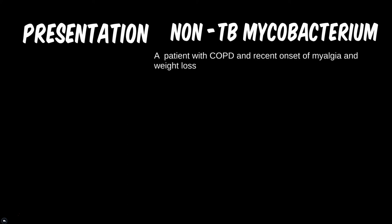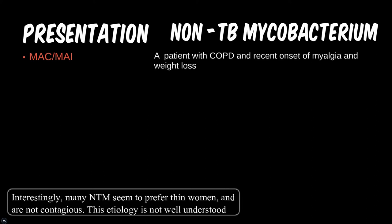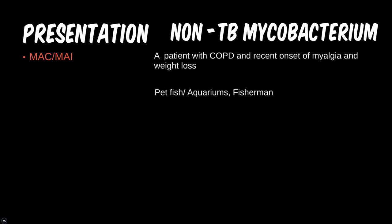If a patient comes in with a history of chronic obstructive pulmonary disease and is now complaining of myalgia and weight loss, which should we consider? MAC, or M. avium-intracellulare, is a TB-like illness that can cause respiratory symptoms. Those with lung disease are also more susceptible to infections, possibly as our lungs are less able to expel the bug on their own.